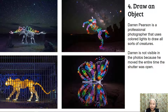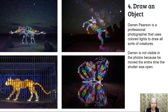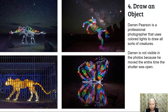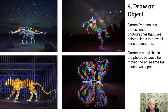Number four: draw an object. Darren Pearson is a professional photographer who uses colored lights to draw all sorts of creatures — we can see a stegosaurus, a unicorn, a tiger that looks like it's in a cage, and a butterfly actually created by using a reflection in water. Darren is not visible in any of these photographs because he moved the entire time the shutter was open. As long as you keep moving, you won't show up, but if you stand still for too long, then you will show.